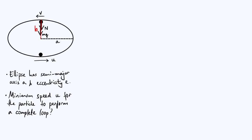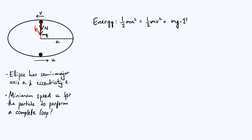The first thing we did in the circular case was consider conservation of energy to see how V is related to U. At the bottom there is ½mu² of kinetic energy — take that as the zero of gravitational potential energy. At the top you've got ½mv² of kinetic energy plus mg times 2B, which is the vertical height from bottom to top. Rearranging gives V² = U² − 4gB.